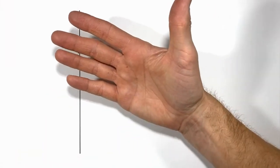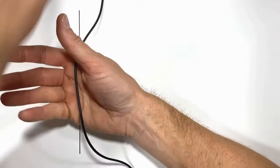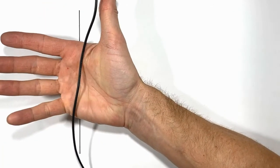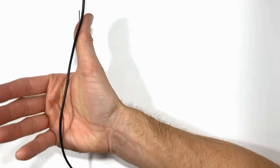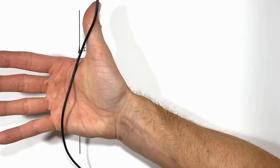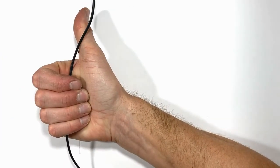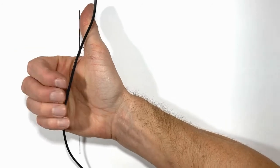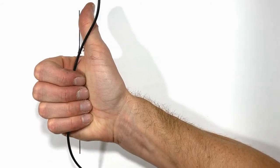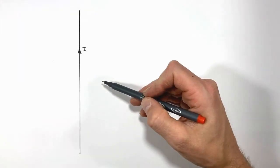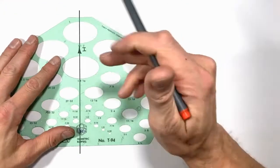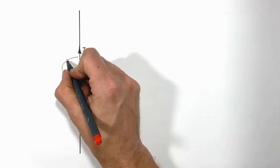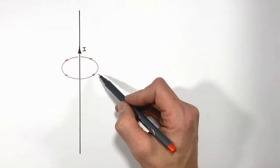Imagine you were to grab this wire like this so that your thumb was pointed in the direction of current. If you wrap your fingers around the wire, the direction your fingers curl, that's the direction of the magnetic field. Or to draw the magnetic field, it would look like this.